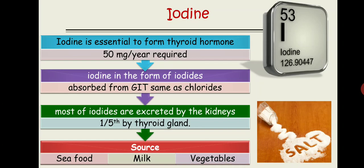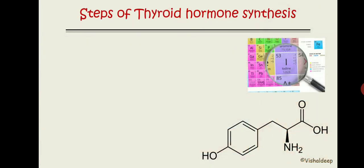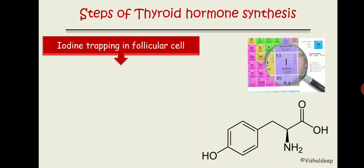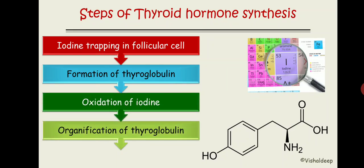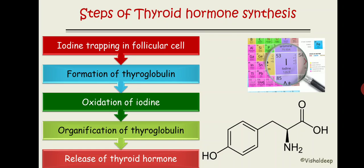The steps of thyroid hormone synthesis can be divided into five steps. The summary remains the same — we just need to attach iodine to the tyrosine molecule. The five steps are: first, iodine trapping in the follicular cell; second, formation of thyroglobulin; third, oxidation of iodine; fourth, organification of the thyroglobulin molecule; and finally, release of the thyroid hormone.